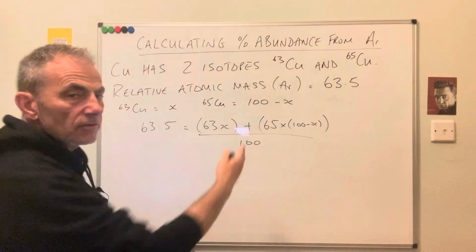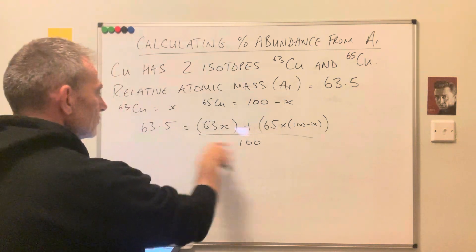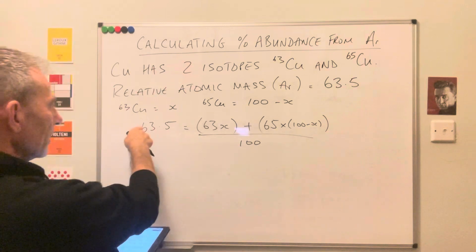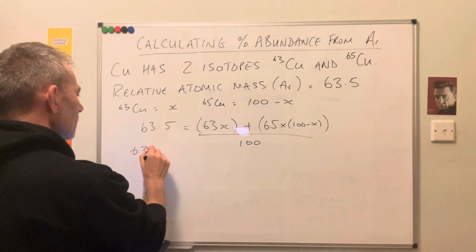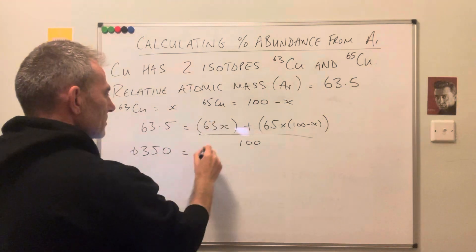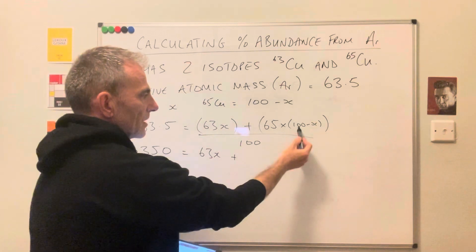So basically what we need to do now is just solve for that x. So we'll take the 100 over here, so it's going to multiply the 63.5. So I'll become 6350 equals 63x plus 65 times 100.